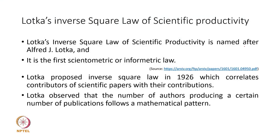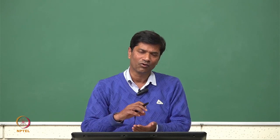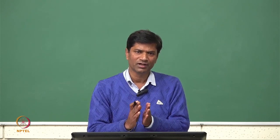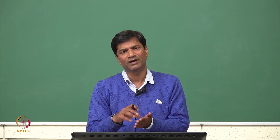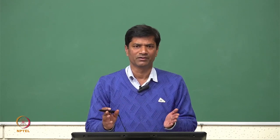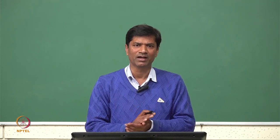Lotka's inverse square law of productivity is named after Alfred J. Lotka and is perhaps the first Scientometrics or Infometrics law. Lotka proposed this inverse square law in 1926, which correlates contributors of scientific papers with their contributions — that is, the number of contributions made by an author.